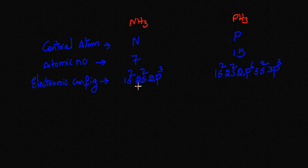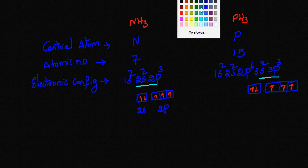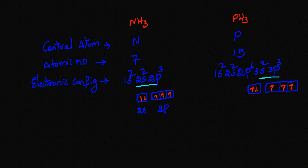As you can see on the screen, in NH3 the central atom is nitrogen, with atomic number 7 and electronic configuration 1s2 2s2 2p3. In PH3, phosphorus is the central atom, with atomic number 15 and electronic configuration 1s2 2s2 2p6 3s2 3p3. Shell 2 and shell 3 are the outermost energy levels for NH3 and PH3 respectively, and both have five electrons in the outermost shell, giving five valence electrons for both molecules.